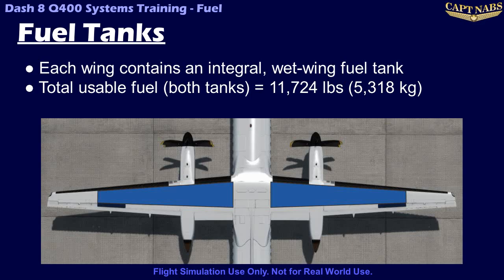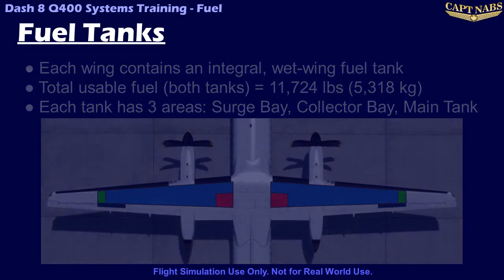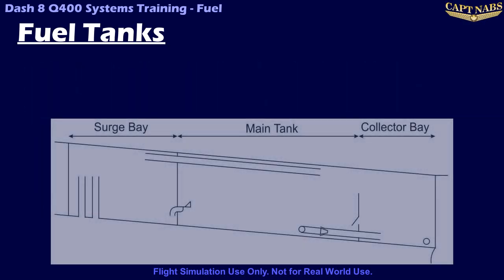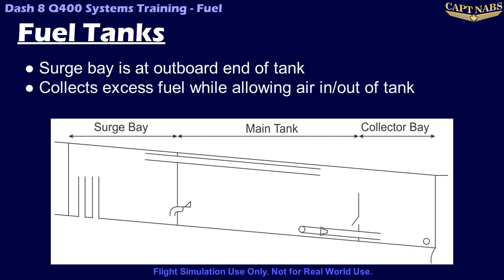Each wing tank is divided into three separate areas: a surge bay, the main tank, and a collector bay. The surge bay is at the outboard end of the tank, between the rib adjacent to the aileron and the next inboard rib. The surge bay is separated from the rest of the tank by a wall, and is used to vent the fuel tank and recover excess fuel.